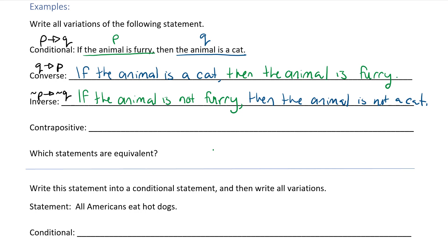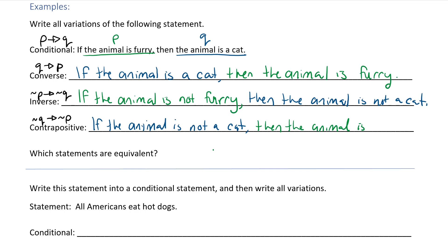And then the last one is the contrapositive, which is if not Q then not P. So if not Q — that's the blue one — if the animal is not a cat, then not P, then the animal is not furry. So in the inverse we have nots, and in the contrapositive we also have nots.